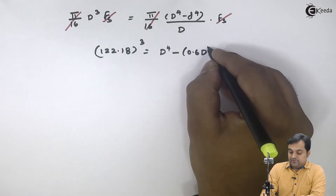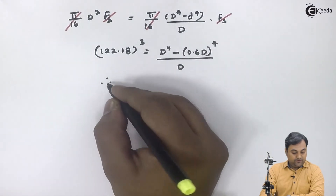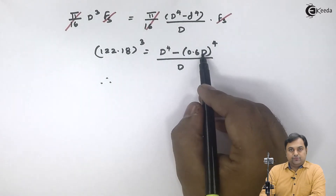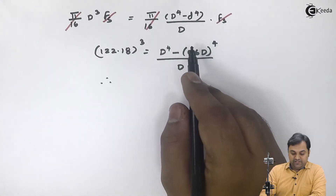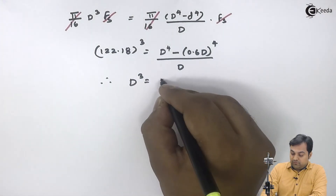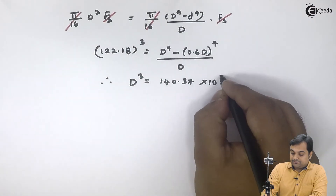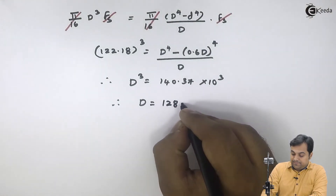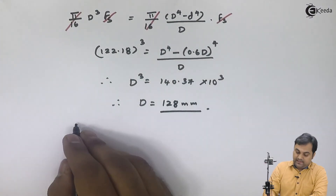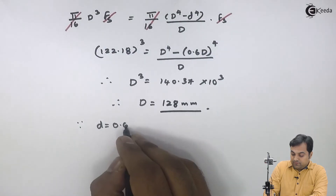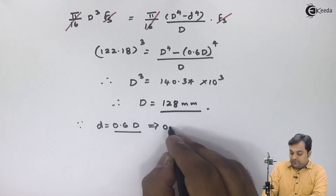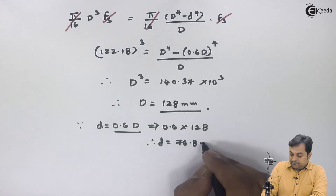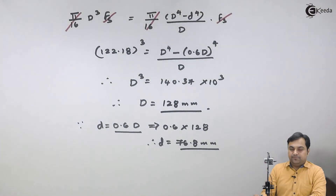In place of small d, the relation is given: small d = 0.6 times capital D. Substituting and simplifying D⁴ − d⁴ divided by D gives D³, so D³ = 140.37 × 10³. Taking the cube root, capital D = 128 mm — that is the outer diameter for the hollow shaft. Since small d = 0.6 × capital D = 0.6 × 128, the inner diameter is 76.8 mm.